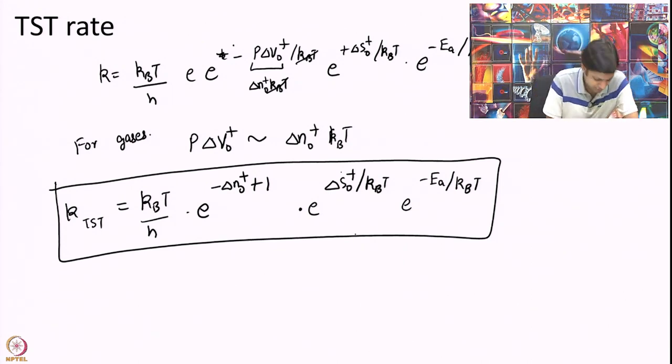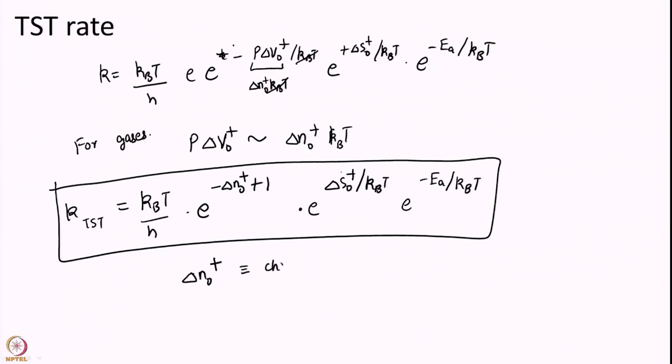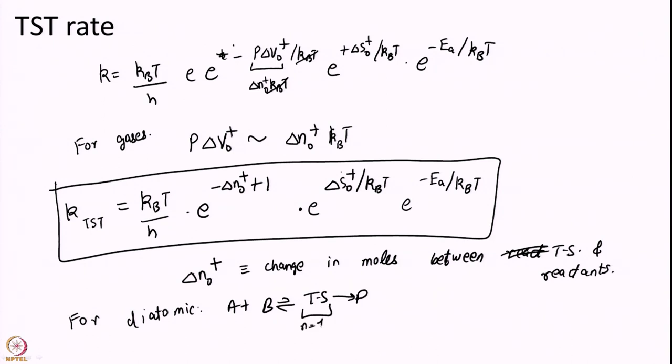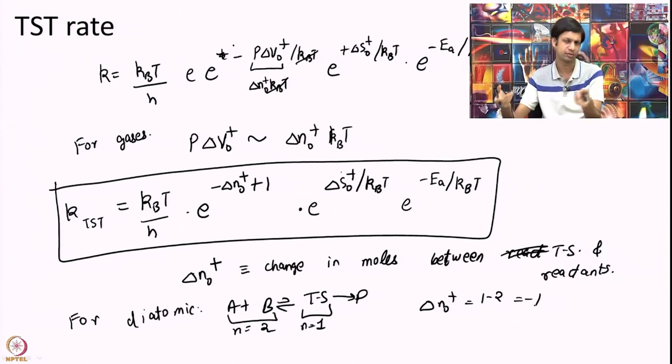And delta N naught again, let me just define very clearly. Delta N naught is the change in moles between transition state and reactants. So, for diatomic, A plus B going to transition state, your N here is 1, your N here is 2. For delta N naught, N naught is 1 minus 2 equal to minus 1. For monoatomic, similarly, delta N naught will be 0 because you have one reactant and one transition state, one mole of each.